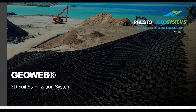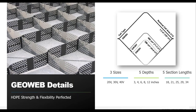We'll start out today talking about the description of the geob soil stabilization system. The geob system consists of two main attributes. The first is the cell size. The cells come in three different diameters: 8.5, 10.5, and 18 inches, with cell heights ranging from 3, 4, 6, 8, and 12 inches.